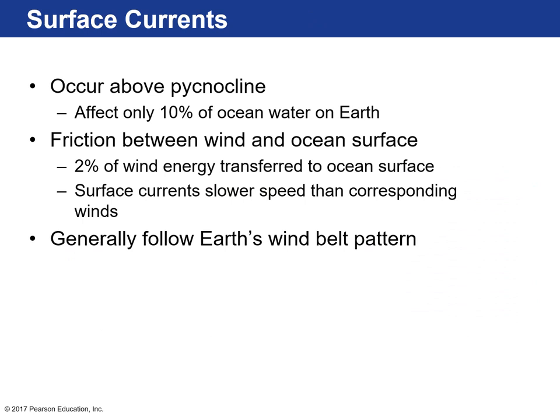Surface currents are all the waters that occur above the pycnocline — that area of rapidly changing temperature and density. That's only about 10% of the ocean water. Surface currents are initiated and sustained by friction between the global wind belts and the ocean surface. As the global wind belts blow across the ocean surface, 2% of that energy from air mass movement is transferred directly to the water.